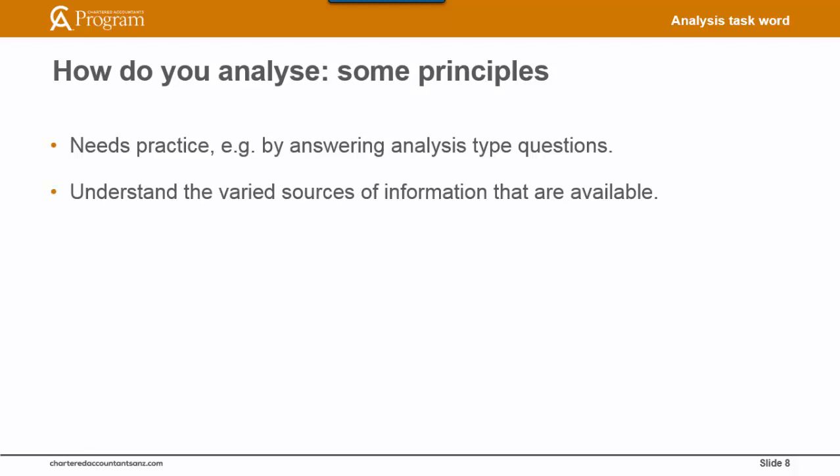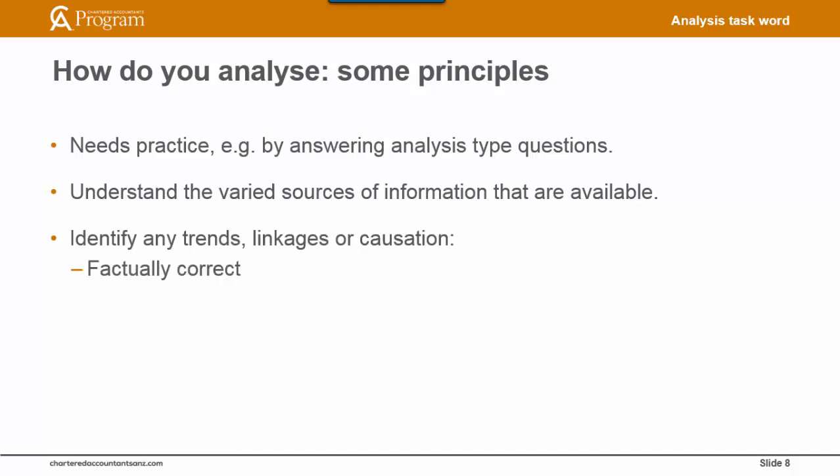Make sure that you understand the various sources of information that are available. Identify any trends, linkages or causation. Answers to an analysis question need to be factually correct. So if it is stated that the selling price has been reduced and then an answer states that the gross margin has reduced as a result of more expensive raw materials, this could be regarded as factually incorrect. Any points of analysis need to be relevant to a question and we should not be adding new information that is not provided in the question. Also be aware of causation versus correlation.